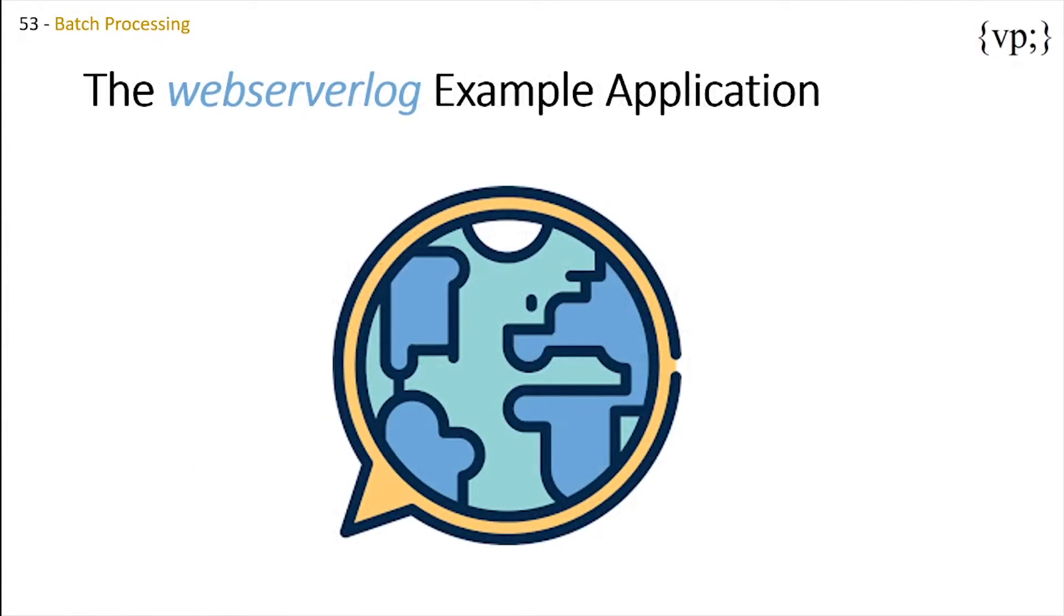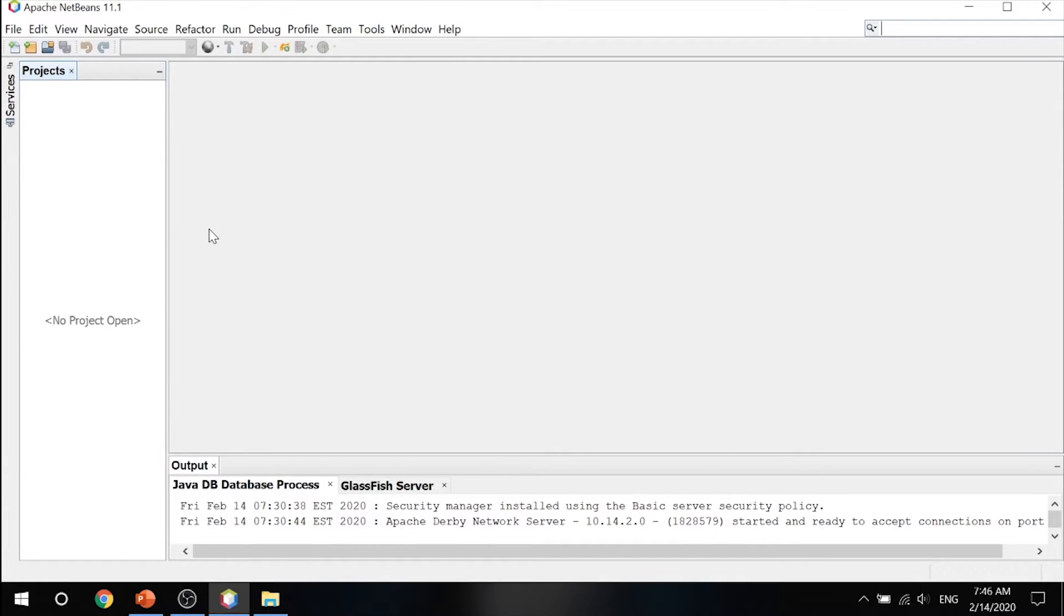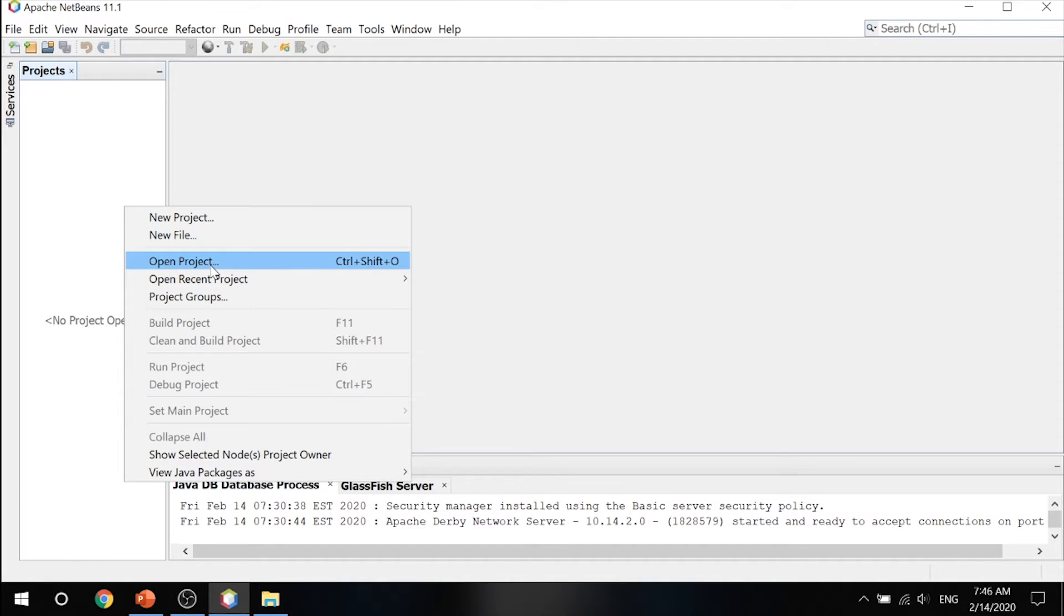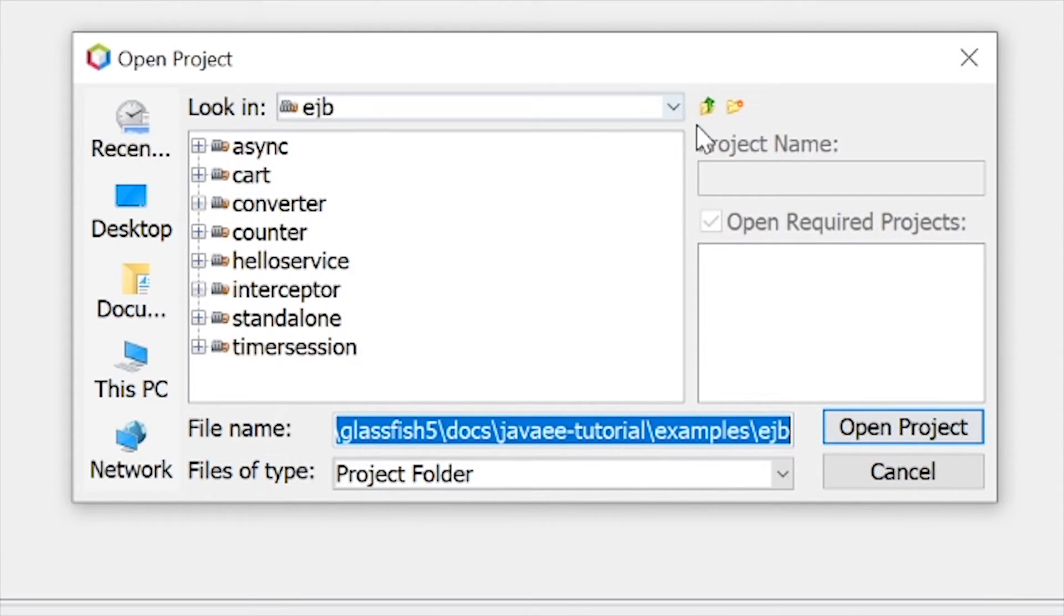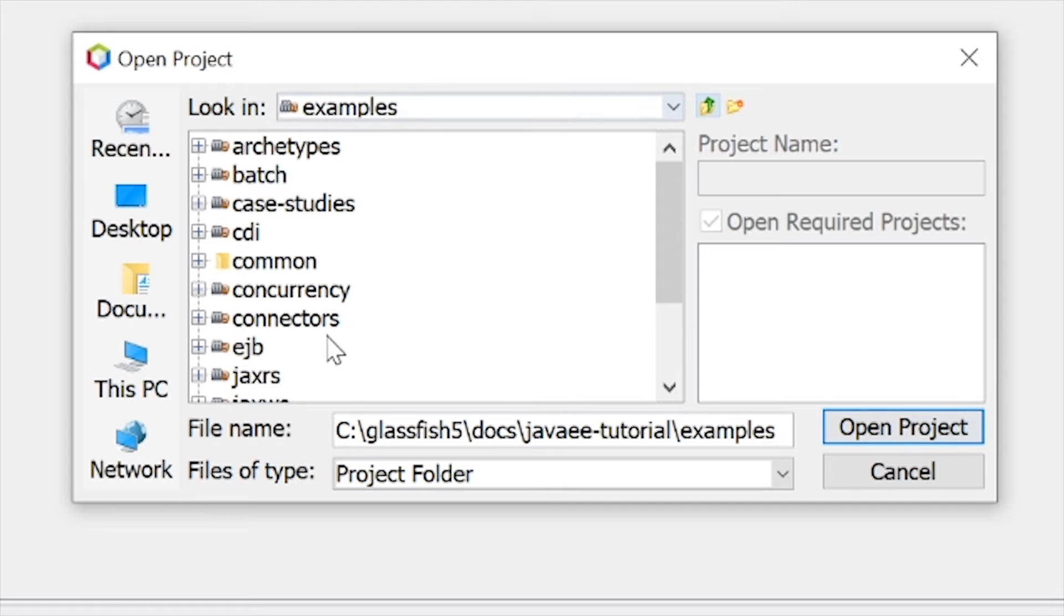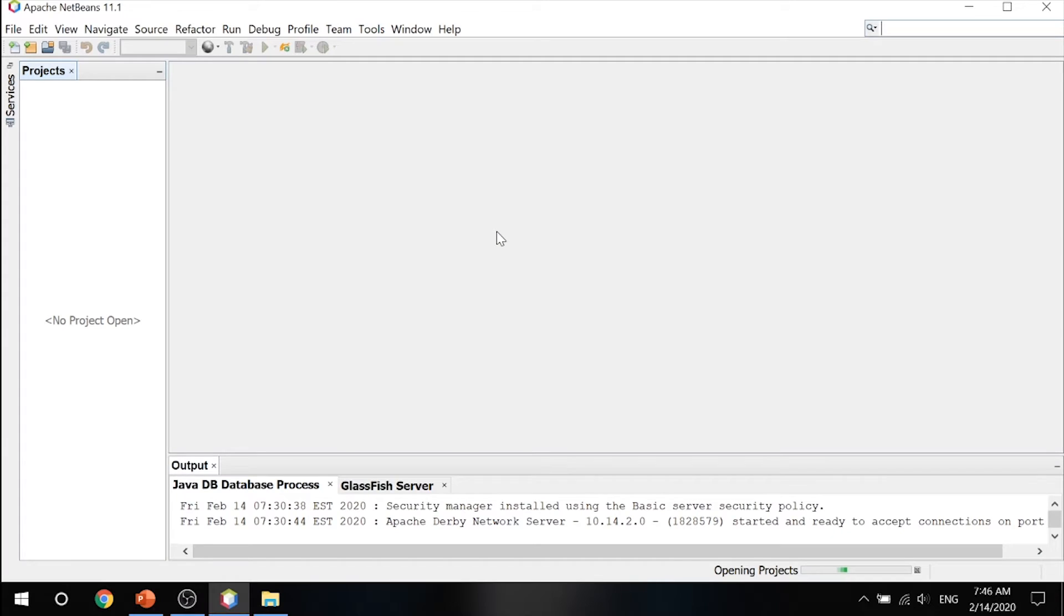So now let's take a look into our example, the web server log. If we jump into our NetBeans, let's go ahead and open up our project. Let's go into our examples and go to batch and web server log. Go ahead and open that project. So the web server log example application demonstrates how to use the batch framework in Java EE to analyze a log file from a web server. This example application reads a log file and finds what percentage of page views from tablet devices are product sales.